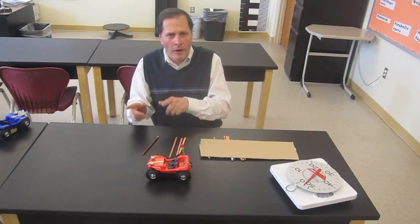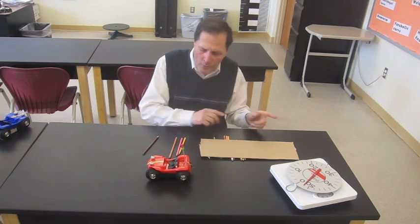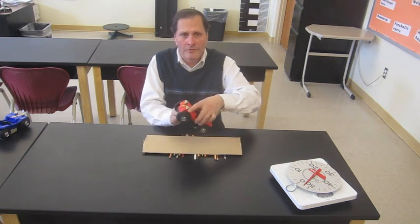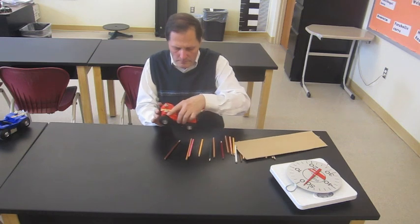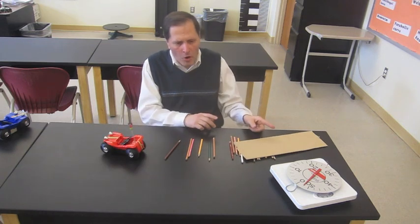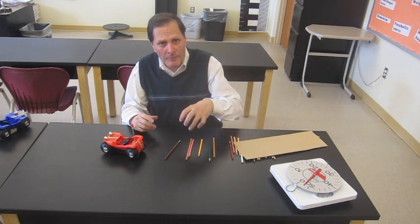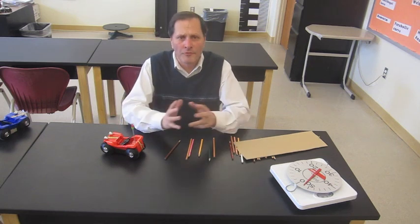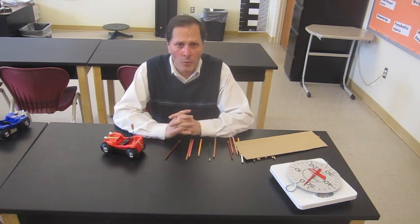For an object to go forward, there has to be something that's being pushed backwards. I can just hold on to it and see the same thing — in this case it's pushing the cardboard back, and I'm massive enough to keep the car from going forward. So anyway, there's my first example of Newton's third law. Stay tuned because I will be showing some other ones in some later videos.